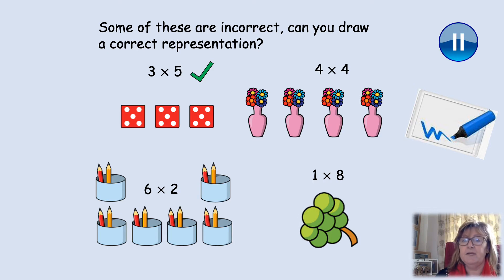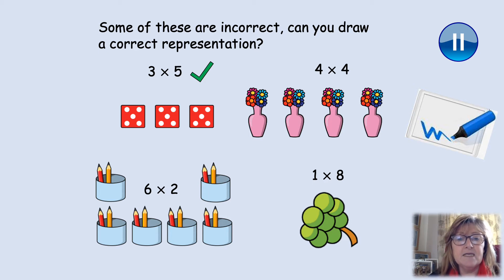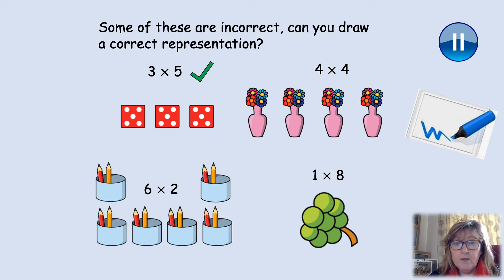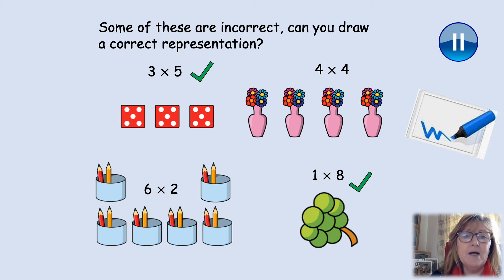In our final picture we have got a bunch of grapes. How many grapes are on this bunch? One, two, three, four, five, six, seven, eight. We've got one bunch of grapes — how many on the bunch? Eight. One times eight is correct, isn't it? Well done if you had a good try at that.